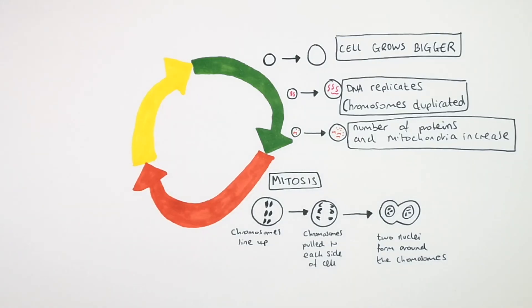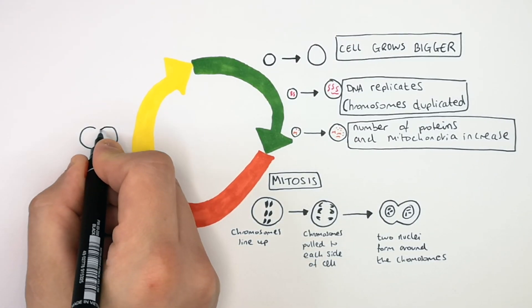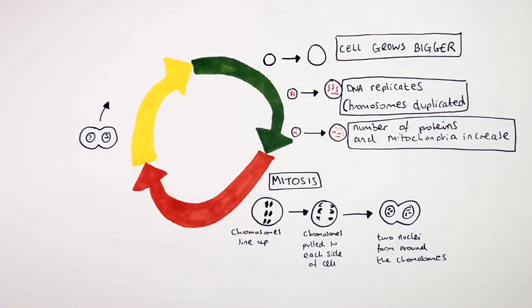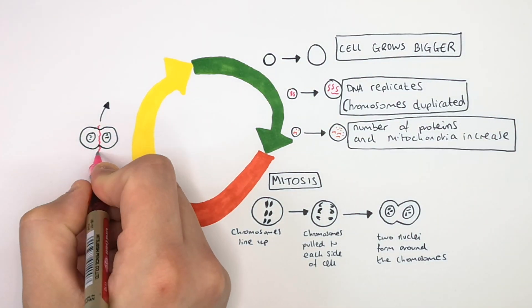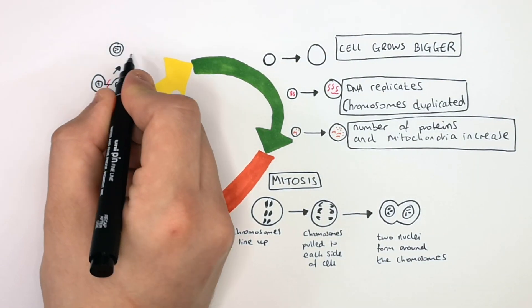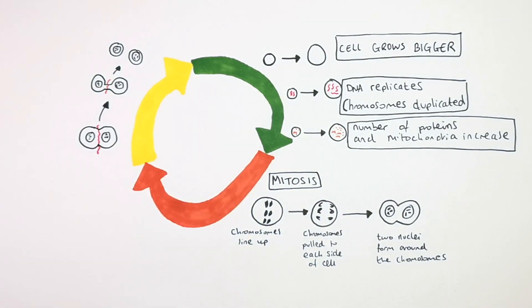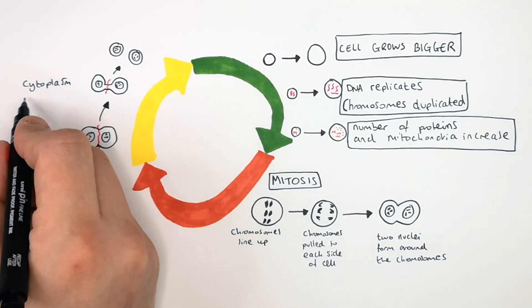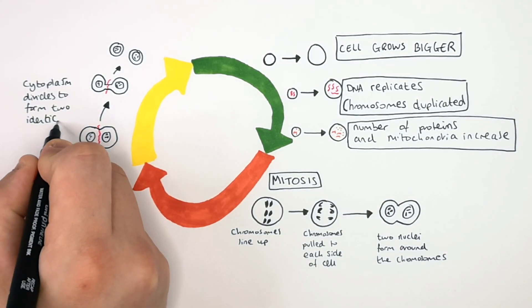The final stage of the cell cycle is when the cell divides into two identical cells. The cell membrane splits and reforms to create two new cells that are genetically identical. The cytoplasm divides to form two identical daughter cells.